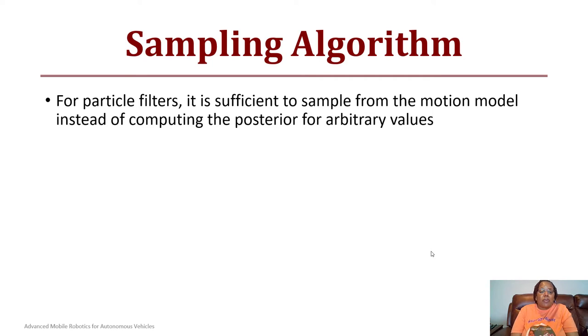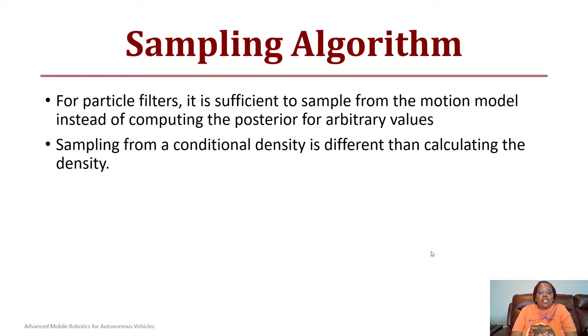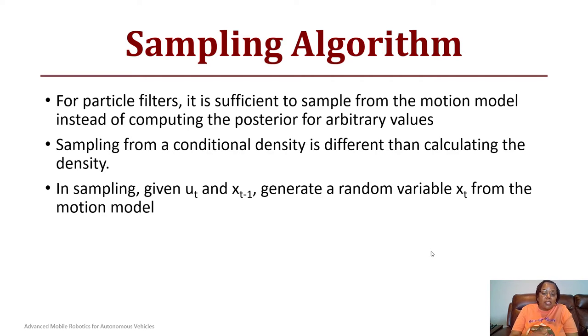The sampling algorithm for particle filters: it's sufficient to sample from the motion model instead of computing the posterior for arbitrary values. Sampling from a conditional density is different than calculating the density because in theory it'll be a little quicker to get an approximation of how the robot's moving.